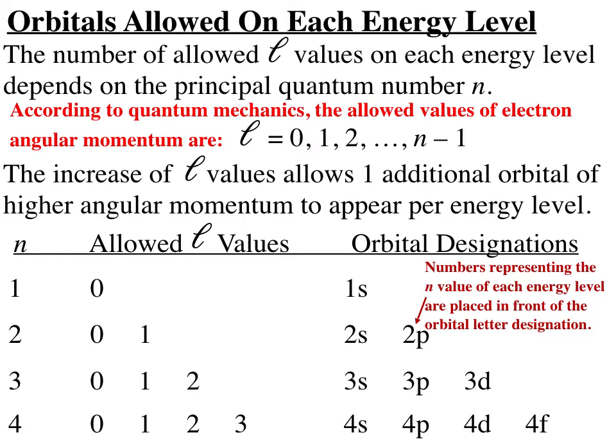You should understand how to apply these rules on each level. On energy level 5, you would have 5S, 5P, 5D, 5F, and a 5G orbital, since L equal to 4 first appears on level 5. On level 6, you can have six different orbitals: 6S, 6P, 6D, 6F, 6G, and 6H.